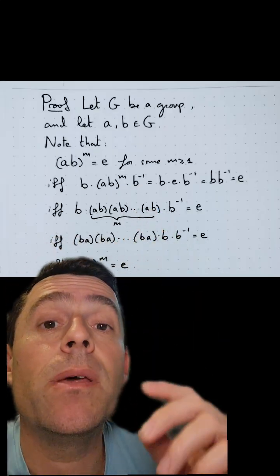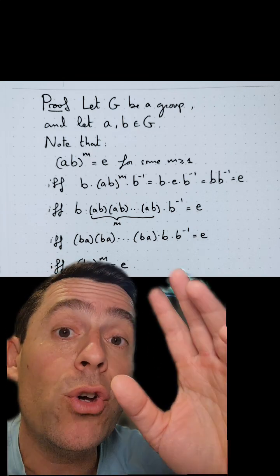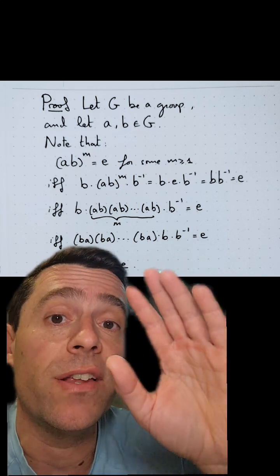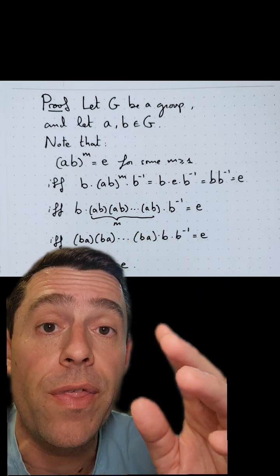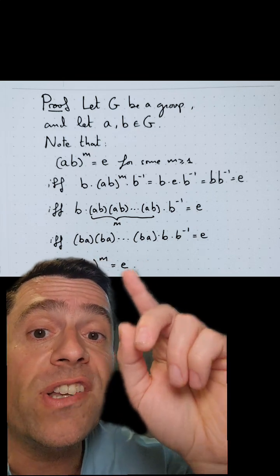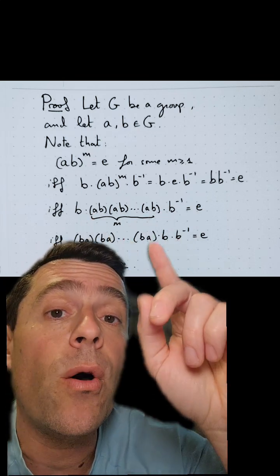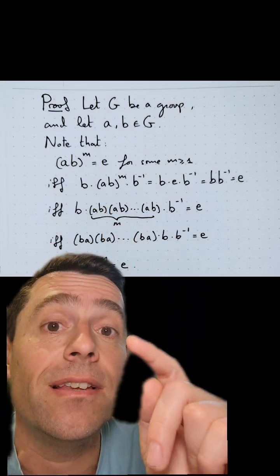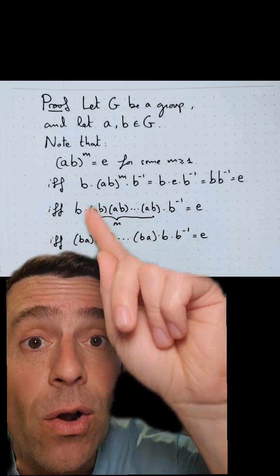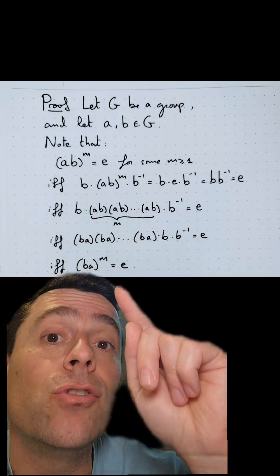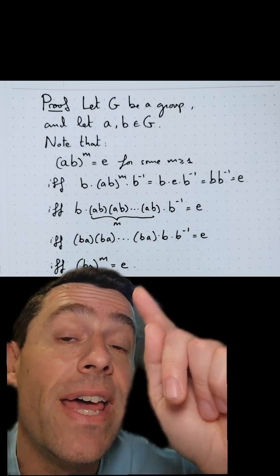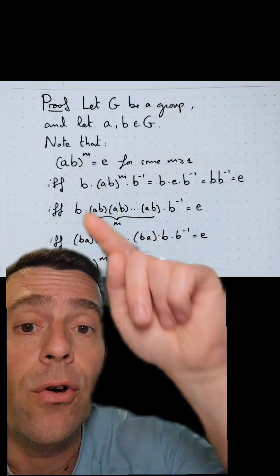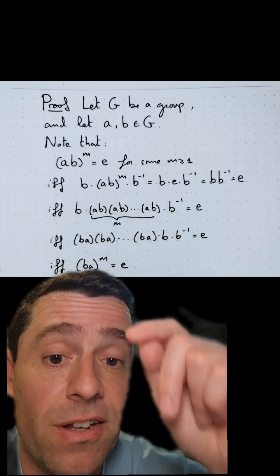Let G be a group and let A and B be elements of the group. What I'm going to do is prove the following equivalence, and then we will prove the theorem. What I'm going to prove first is that if there is a power M such that A times B to the Mth power is the identity, that's if and only if B times A to that same power M is the identity. Let me show you how you prove this equivalence.